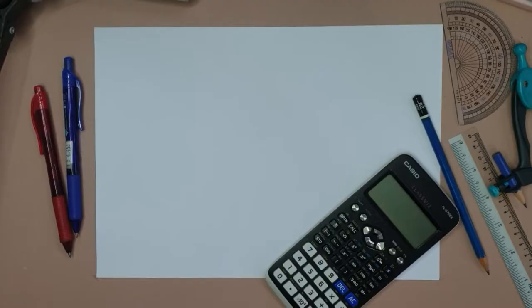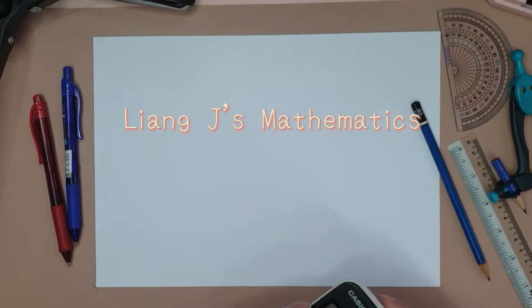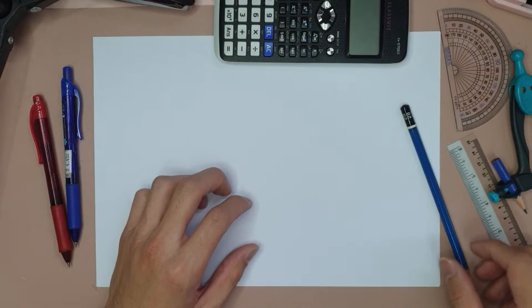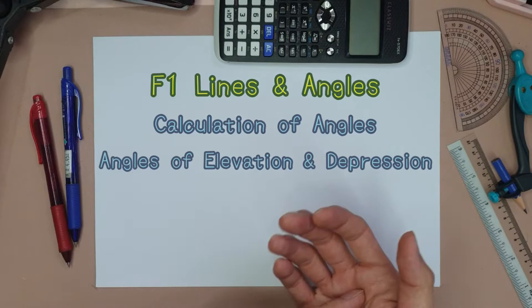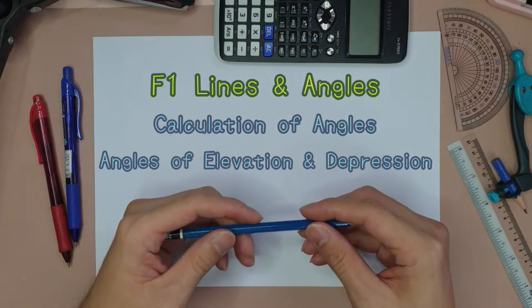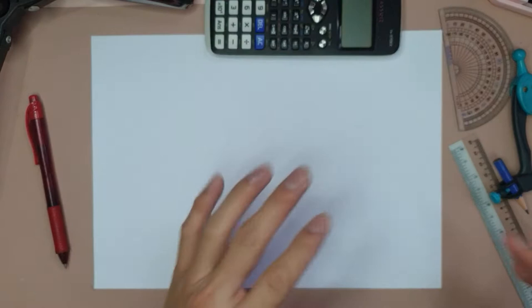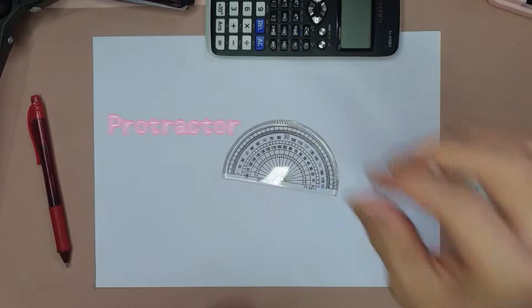Okay everybody, let's start. Today we're going to talk about geometrical constructions — used to be called geometrical constructions, and now it falls under Form One Lines and Angles. So under Form One Lines and Angles, you have calculation of angles, angle of elevation and depression, and then this very important part called constructions. I'm going to cover all the constructions you need in Form Three, PT3.